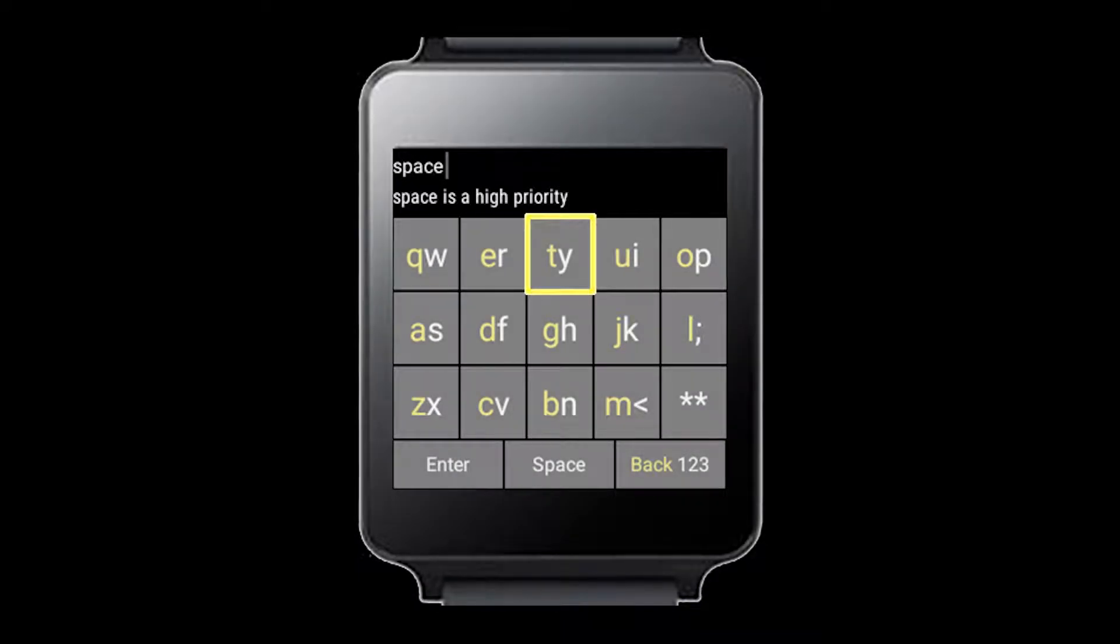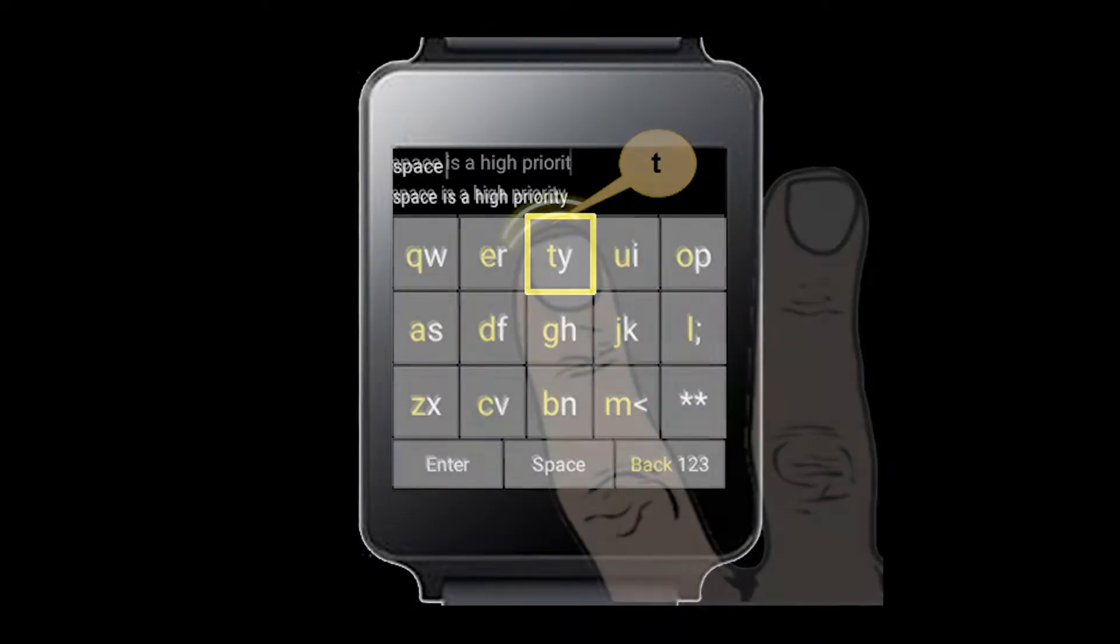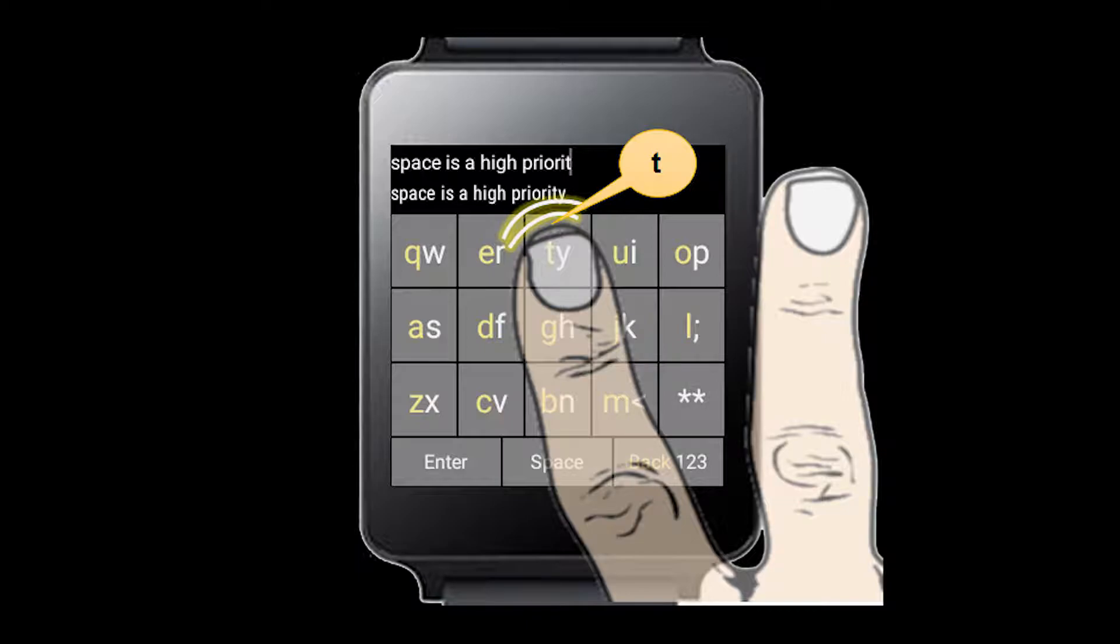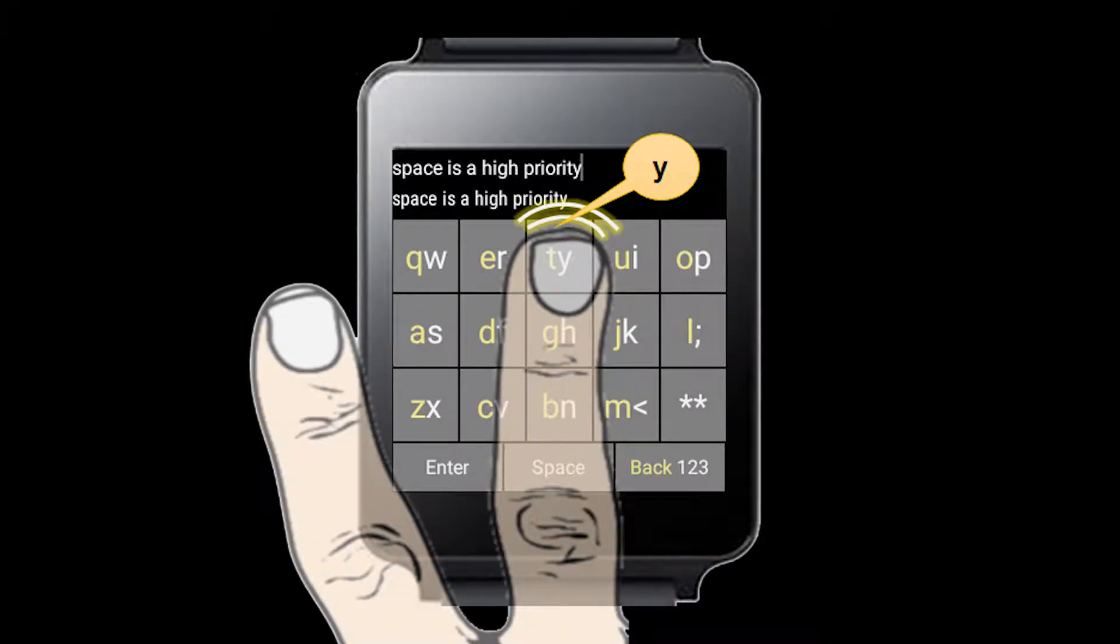Every key has two letters. The left letter is typed when the key is pressed with the index finger. The right letter is typed when the key is pressed with the middle finger.